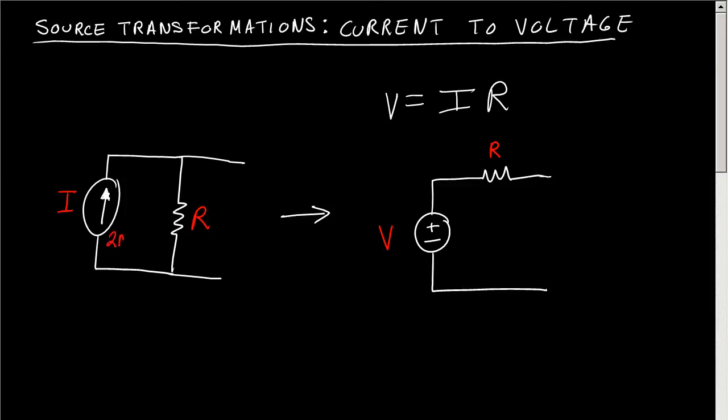So let's say that our current was 2 milliamps and that our resistance was 5 kilo ohms. Then our voltage will be 2 milliamps times 5 kilo ohms. That gives us 10 volts, and the resistance stays the same.